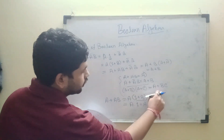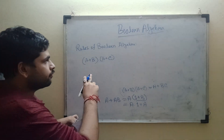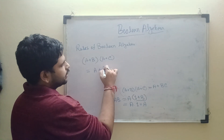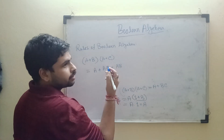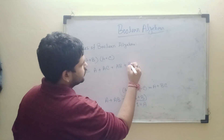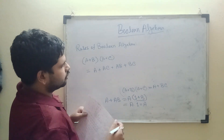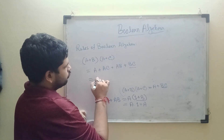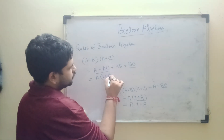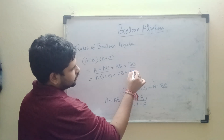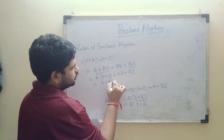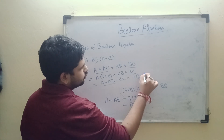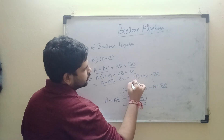To prove (A + B)(A + C) = A + BC: expand the left side — A·A + A·C + B·A + B·C = A + AC + AB + BC. Factor A from A + AC + AB, giving A·(1 + C + B) + BC. Since 1 + C + B = 1, this reduces to A + BC. The third rule is proved.